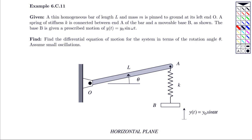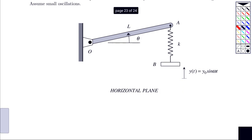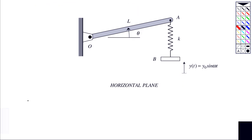And what we want to do is find the differential equation of the motion of the system in terms of small rotation angles of theta. So we're going to start out with our usual step here, step 1, of drawing an FBD.